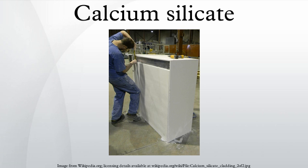Calcium silicate is a white free-flowing powder derived from limestone and diatomaceous earth. It has a low bulk density and high physical water absorption. It is used in roads, insulation, bricks, roof tiles, table salt, and occurs in cements where it is known as belite. It is used as an anti-caking agent in food preparation and an antacid, and is approved by the United Nations FAO and WHO bodies as a safe food additive in a large variety of products.